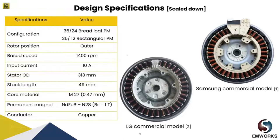The stack length was set to 49 millimeters. Moving ahead to materials, we have chosen M27 steel with a thickness of 0.47 millimeters for both the stator and rotor cores. We have a permanent magnet of NdFeB N28 whose residual flux density is close to 1 Tesla. The conductors are chosen as copper material.